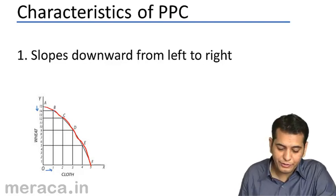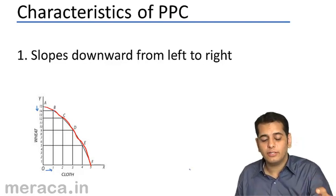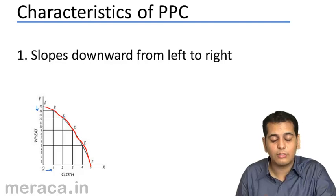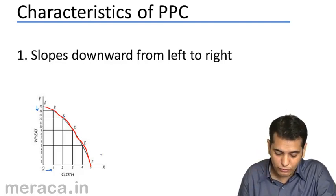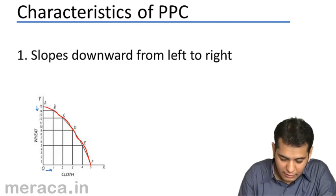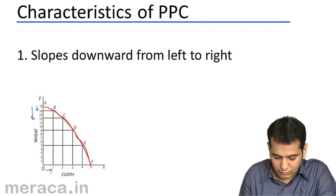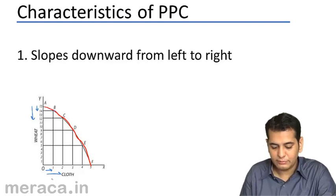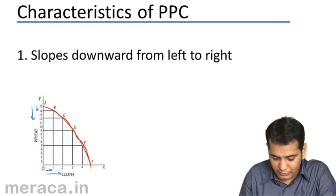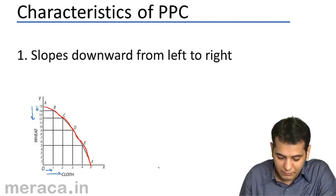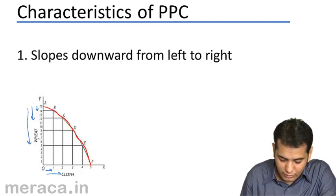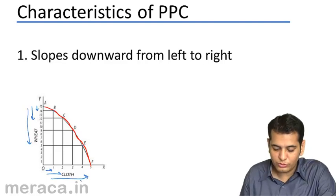Again we go to point C. Now we are producing 12 units of wheat and 2 units of cloth. What is happening? Again we are moving down and towards right. So if we consider point E, combination E, what is happening? We are still moving downwards and towards the right.